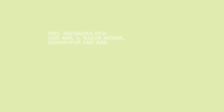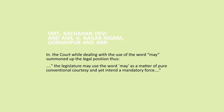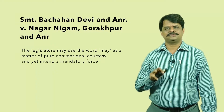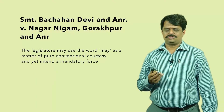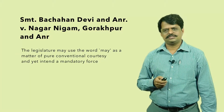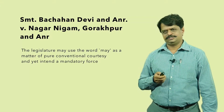Similarly, in Bachchan Devi and Another v. Nagar Nigam Gorakhpur and Another, the court interpreted the term 'may' used in Section 357. Interestingly, the court said that the legislature might have used the term 'may' as a matter of pure conventional courtesy — the legislature never intended it to mean a discretionary option for the judge to grant or refuse. It shall be granted. Conventional courtesy by the legislature should not be taken as discretion to the judge. This was an important and interesting judgment laid down by the court.